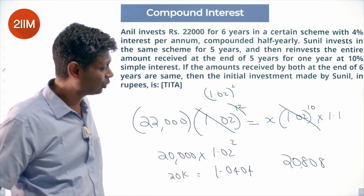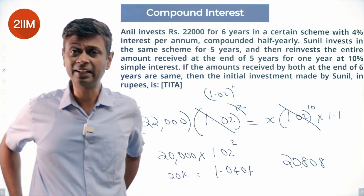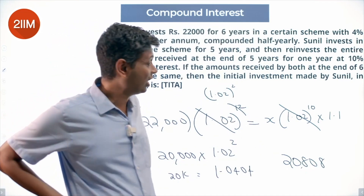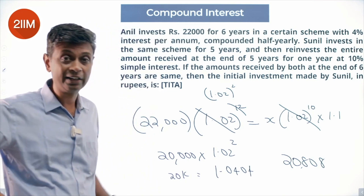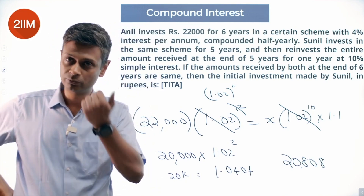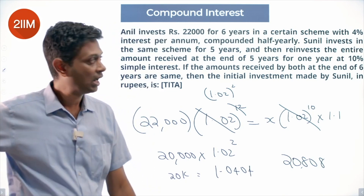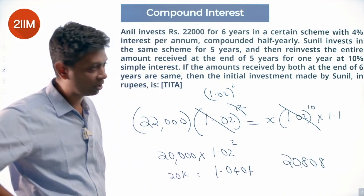Sunil should have invested ₹20,808 to get the same amount as Anil at the end of the 6-year period.